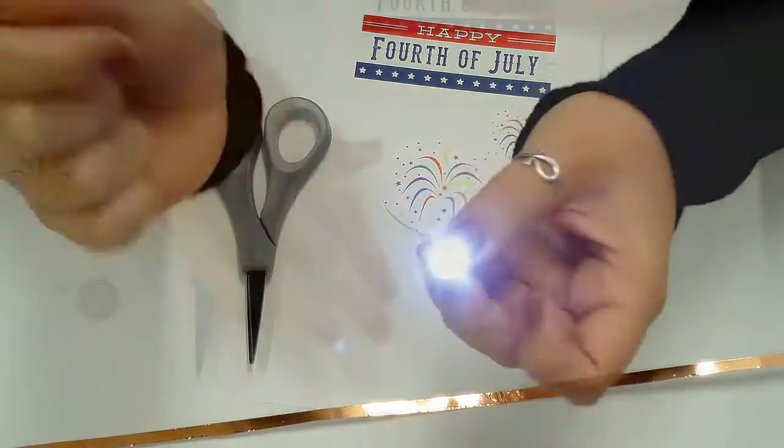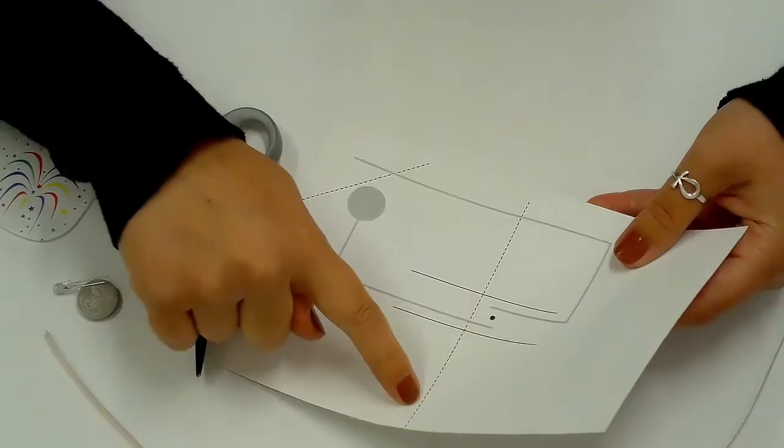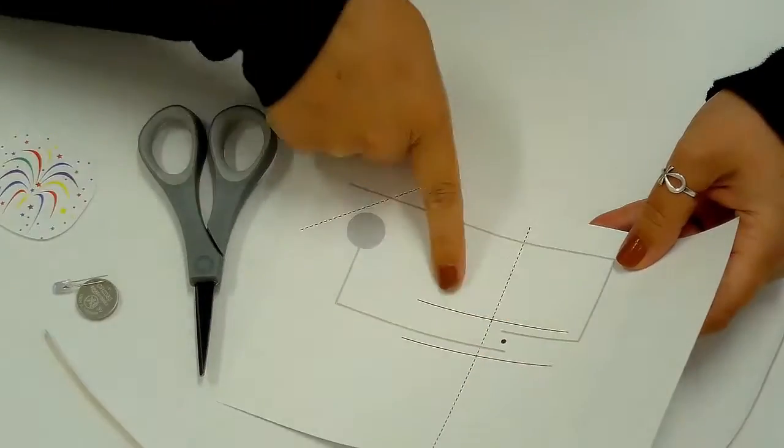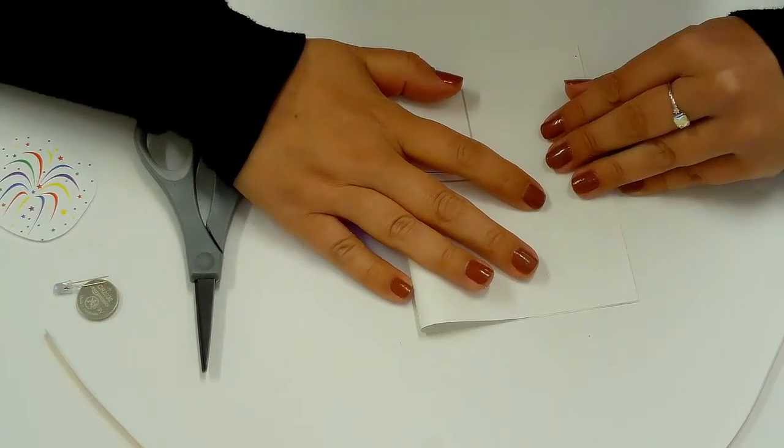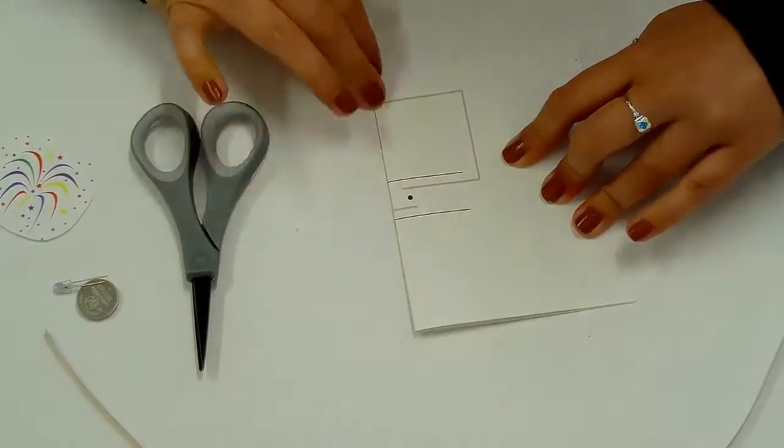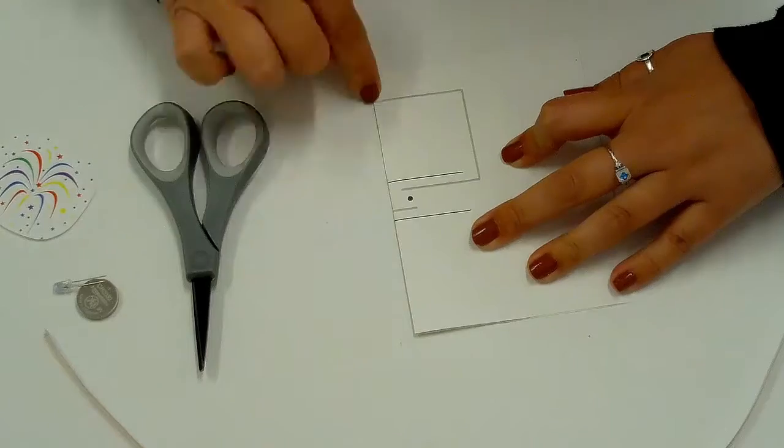Let's get started! The dotted lines are fold lines and the solid lines are cut lines. Start by folding the card in half at the dotted fold line. Crease the card well, avoiding the space between those solid cut lines.